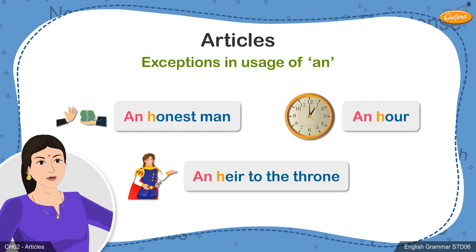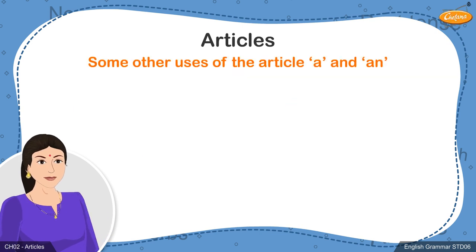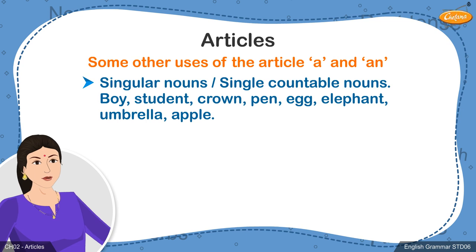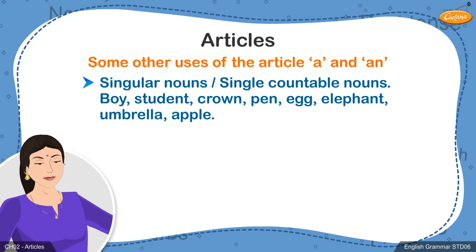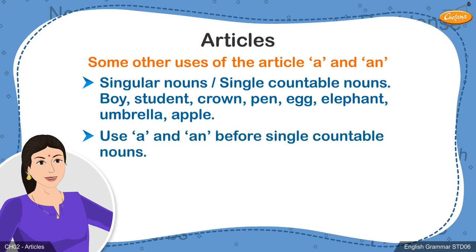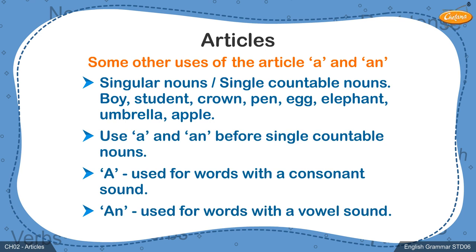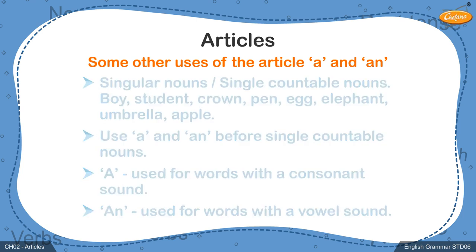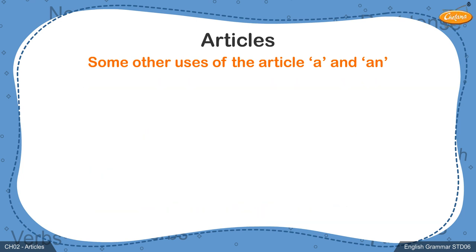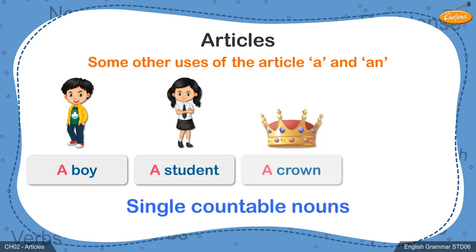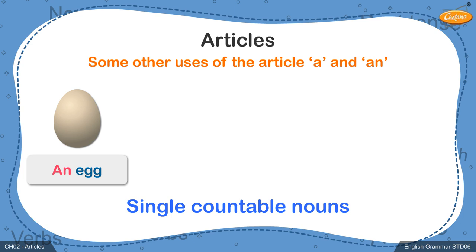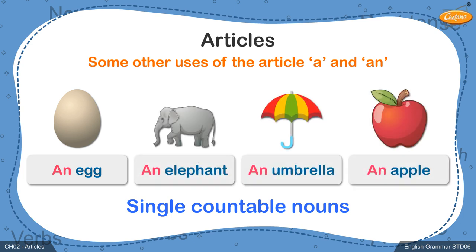Even when you write these words, you have to use the article you would use when you speak. Words like boy, student, crown, pen, egg, elephant, umbrella, apple are single countable nouns or singular nouns. A and an are used before a single countable noun, depending on whether the word begins with a vowel sound or a consonant sound. Hence, the given examples can be written as a boy, a student, a crown, a pen, an egg, an elephant, an umbrella, an apple.